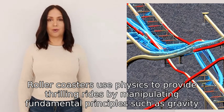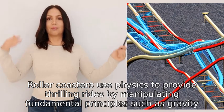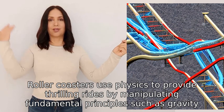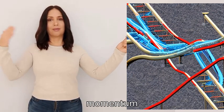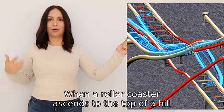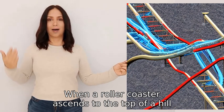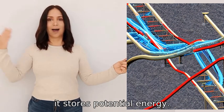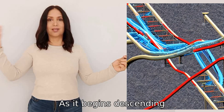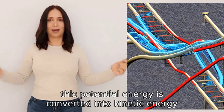Roller coasters use physics to provide thrilling rides by manipulating fundamental principles such as gravity, momentum, and energy. When a roller coaster ascends to the top of a hill, it stores potential energy. As it begins descending, this potential energy is converted into kinetic energy.